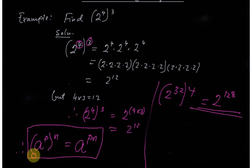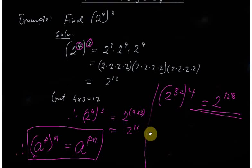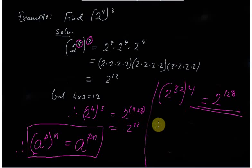So remember: a to the power p, to the power n, equals a to the power p times n — without any bracket. Thank you, and I hope this helps you with logarithm laws, especially the law of power. Apply this law to find the logarithm of a power. Be blessed.